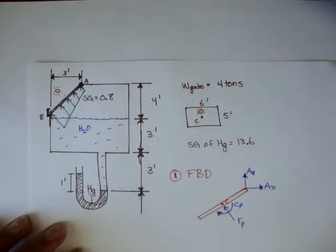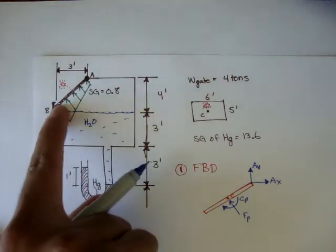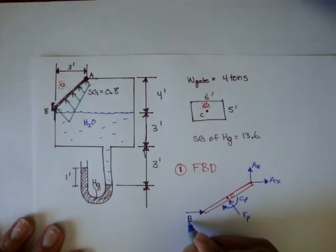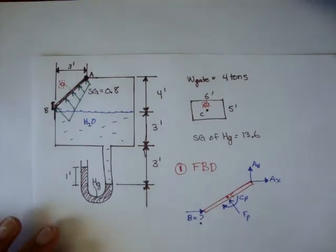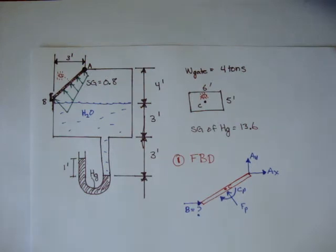And down here at B, well, the B, there's a force at B going horizontal, keeping the gate from going up. So, down at B, we just have one force. And they're saying, well, what is B? What's that force needed to keep this gate closed under this liquid scenario?